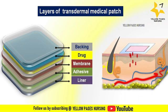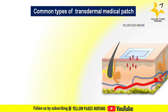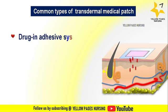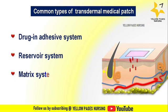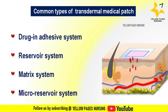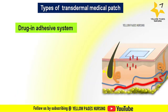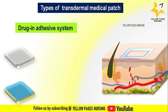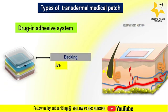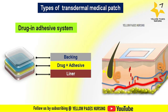There are different common types of transdermal medicated patches. The first is the drug-in-adhesive system, composed of three layers: backing, drug with adhesive, and liner. The adhesive layer of the patch contains the drug and this slowly releases into the skin.